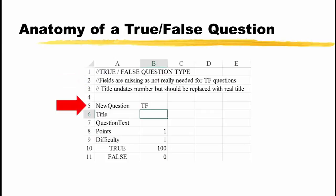Cell A5 contains the text NewQuestion, without a space between the two words. It must be entered exactly like this. Cell B5 contains TF, short for True-False and nothing else. Please note that this text is in B5 and not a continuation of the text in cell A5.